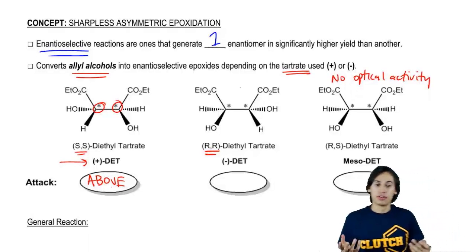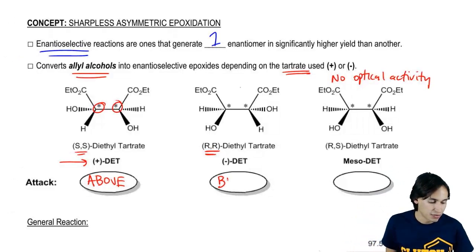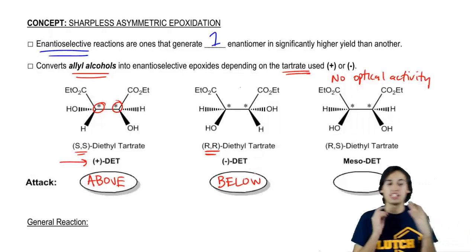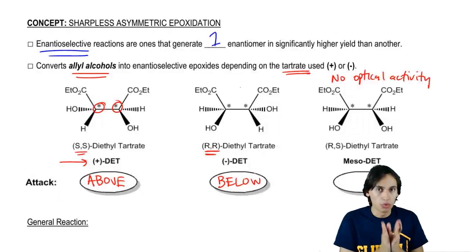Then we've got the negative one. The negative one is going to be the opposite so it's going to attack from below. And we would expect the one from below to now form an epoxide below the double bond.